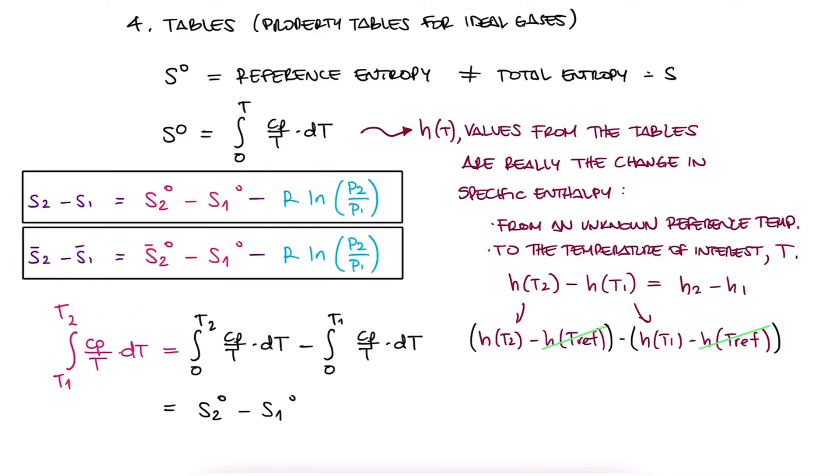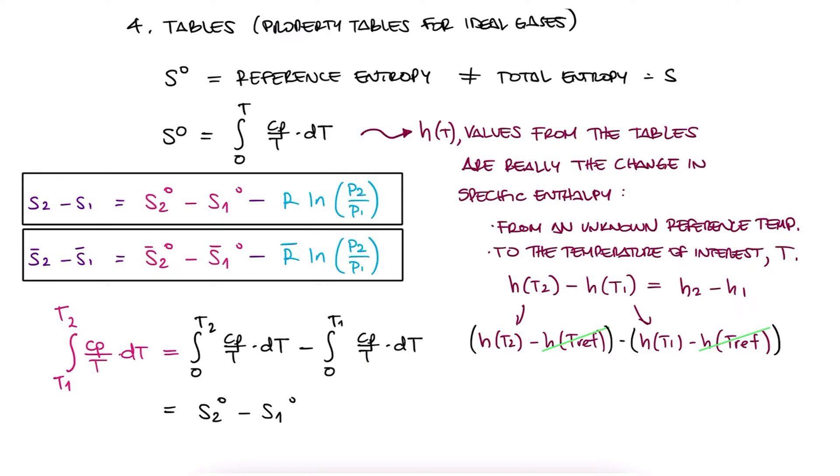And again, we can write it as molar specific properties. This is what we call the exact analysis. And let's finish this lecture with the simplification of these expressions for ideal gases for isentropic processes. Since an isentropic process is a process at constant entropy, S2 is S1, and the difference between them is 0.